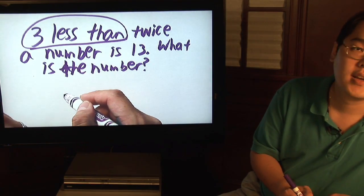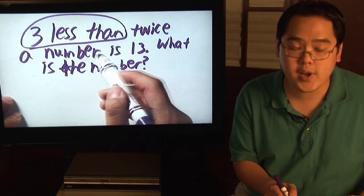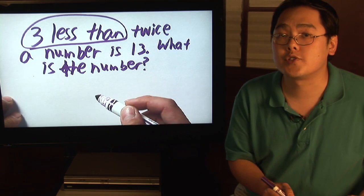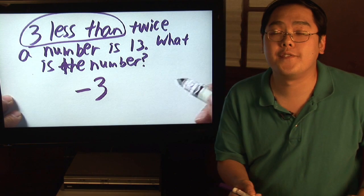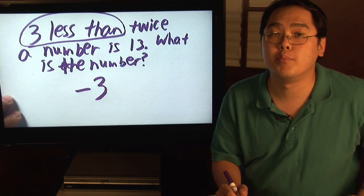Three less than. It's very easy to want to put the less than symbol on it, but when you have a number less than something, it actually involves subtraction. So three less than means it's minus 3. If the phrase had said three more than, it would have been plus 3.